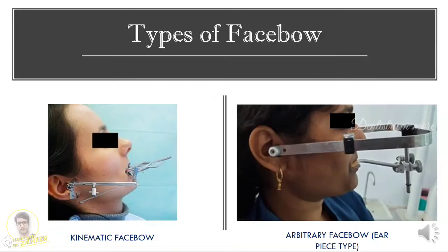There are two different types of facebow. One is the kinematic type and the other is the arbitrary type. In the arbitrary type, the most commonly used one — and what you're seeing in this picture — is the earpiece type, and the second one is the fascia type. The fascia type sits somewhere just anterior to the tragus, and in the earpiece type we have condylar rods that go and engage the ear.